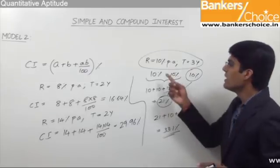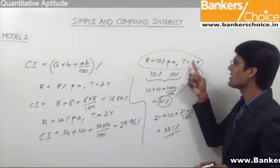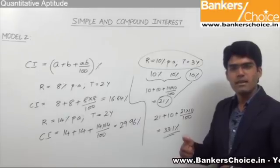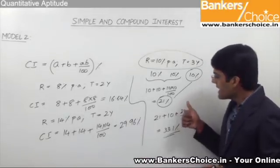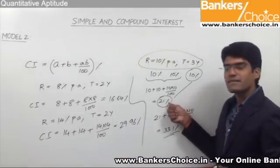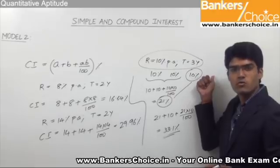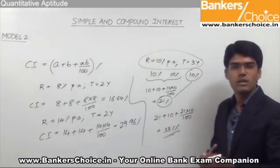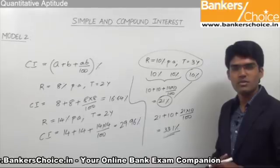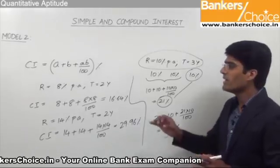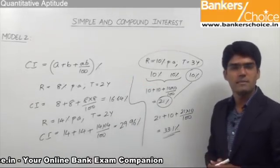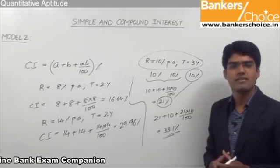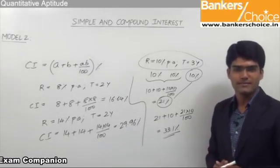Likewise, for 12% per annum over three years, first combine two 12% values using a + b + ab/100, then take that effective percentage with the remaining 12% and apply the formula again to get the answer for three years. This is how we use a + b + ab/100 to find compound interest as a percentage for two or three years.